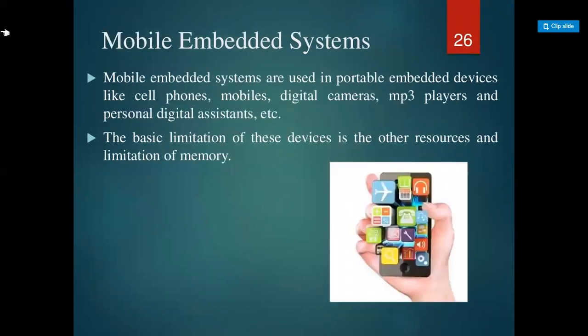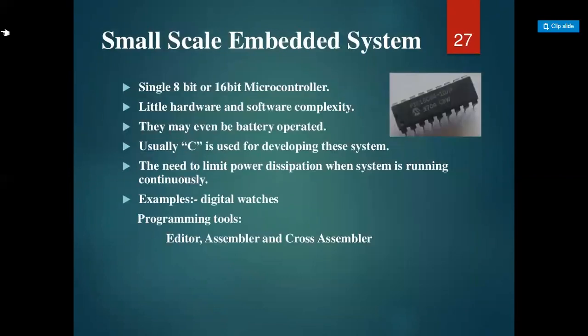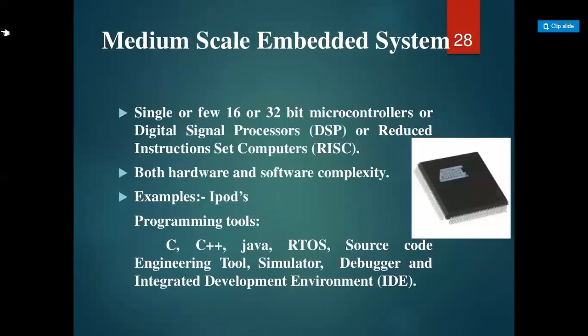Mobile embedded systems are used in portable devices like cell phones, mobile phones, digital cameras, MP3 players, and personal digital assistants. Their basic limitation is limited memory and other resources. Small-scale embedded systems use a single 8-bit or 16-bit microcontroller with little hardware and software complexity; they may be battery-operated. C programming is used for these systems to limit power dissipation. An example is a digital watch. Programming tools include assembler, cross-assembler, and editor. Medium-scale embedded systems use single or a few 16 or 32-bit microcontrollers or DSPs; an example is iPods, programmed in C, C++, or Java.